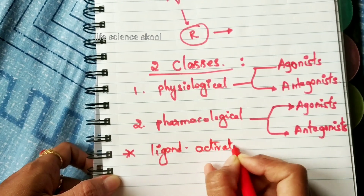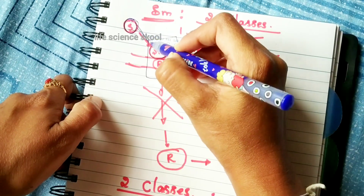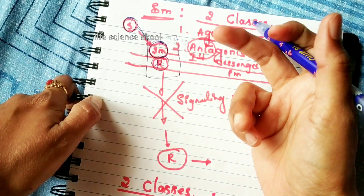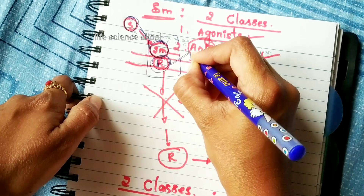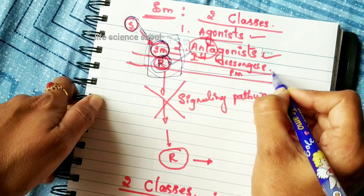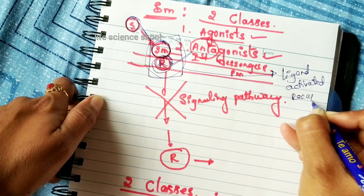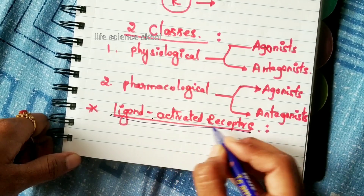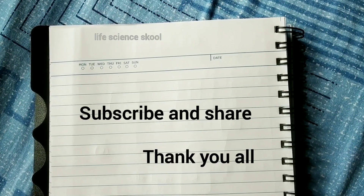Now let us learn about ligand-activated receptors. The sender cell sends information via the signaling molecule. The signaling molecule attaches to the receptor and induces a conformational change in the receptor, leading to its activation. This is called a ligand-activated receptor. We will learn more basics of cell signaling in Part 2. If you learned something new from this video, please share and subscribe. Thank you.